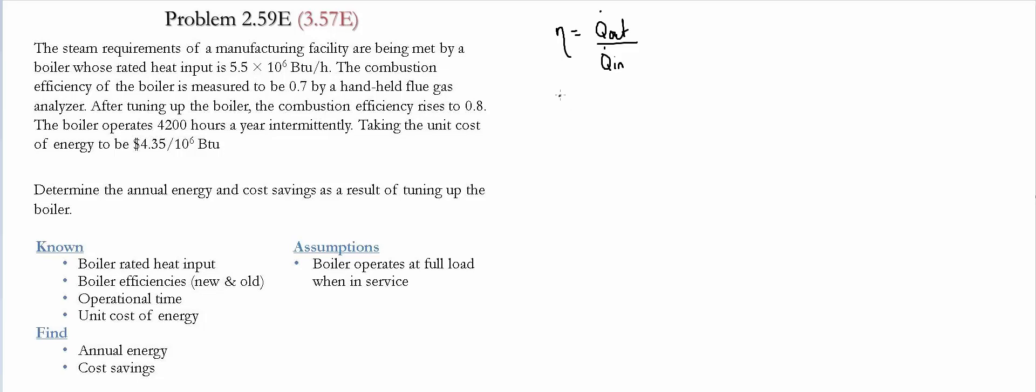So for case one, we're going to calculate the amount of Q out and that is going to be equal to the efficiency and the amount of Q in. In that case, we have 0.7 times 5.5 times 10 to the 6 BTU per hour.